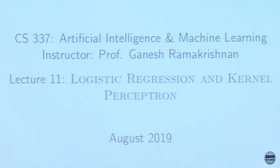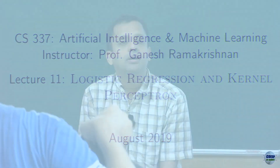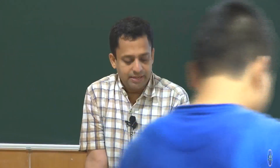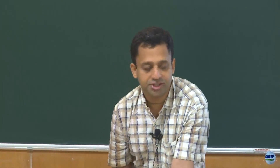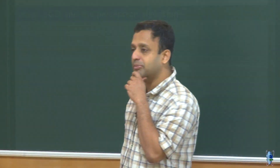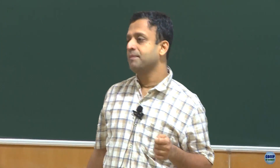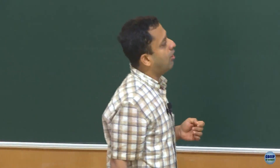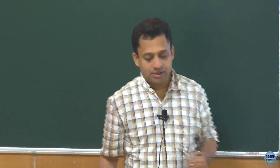Good morning. We will resume our discussion on perceptron and then move on to logistic regression and kernel perceptron. Recap of the stochastic gradient descent algorithm for perceptron: we discussed that the perceptron update rule was nothing but gradient descent evaluated on a per-example basis with respect to a loss function, which is the hinge loss.